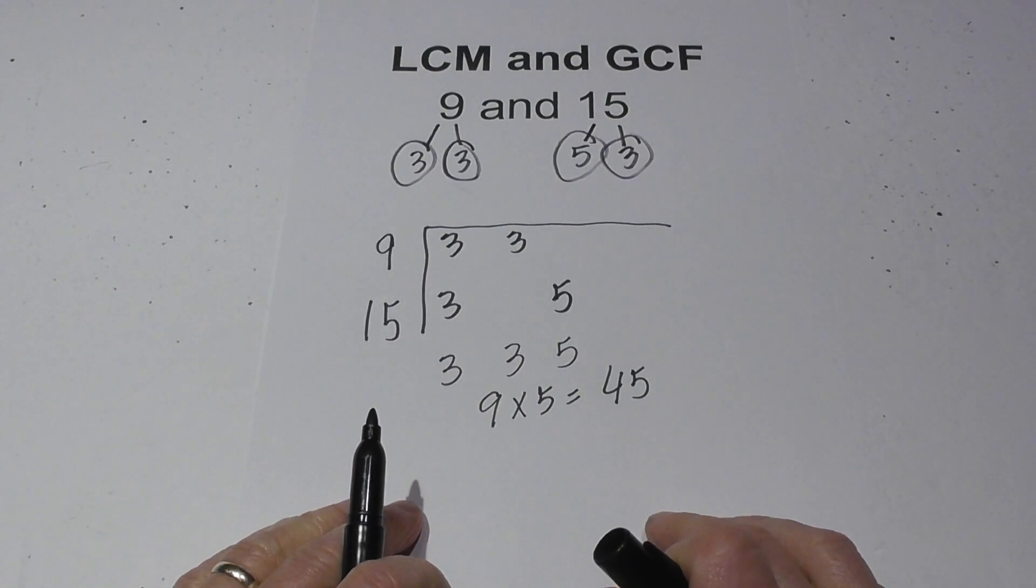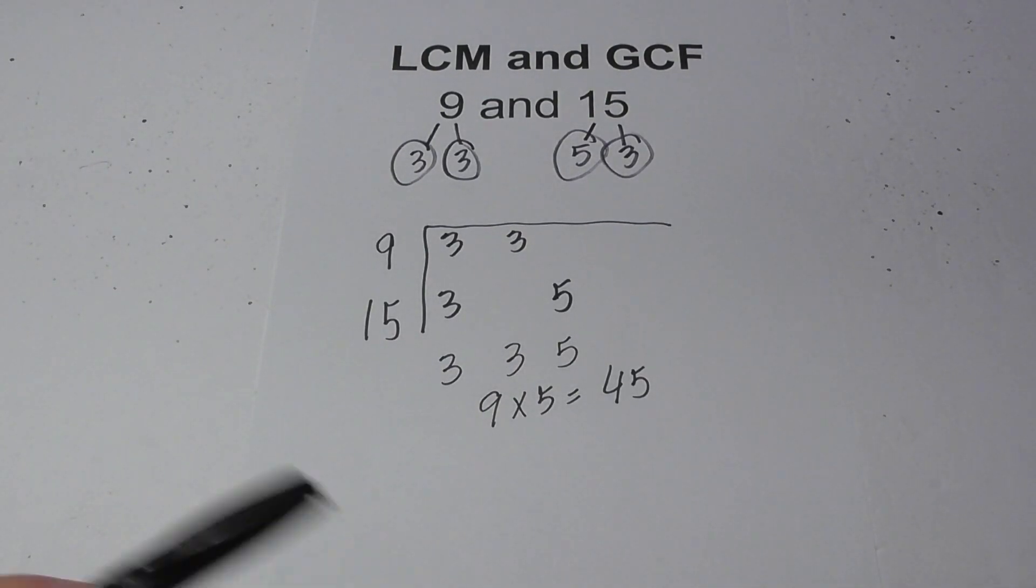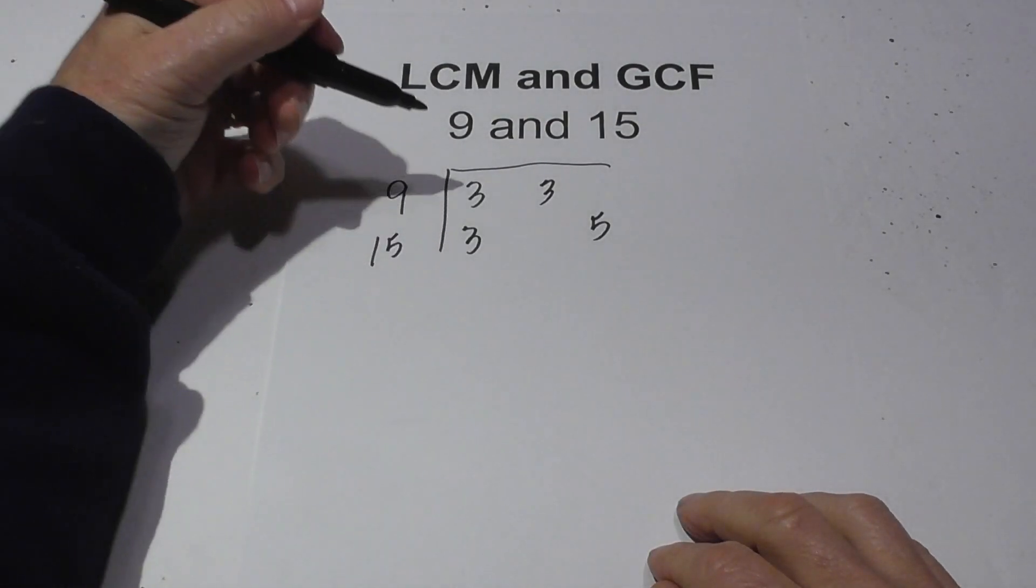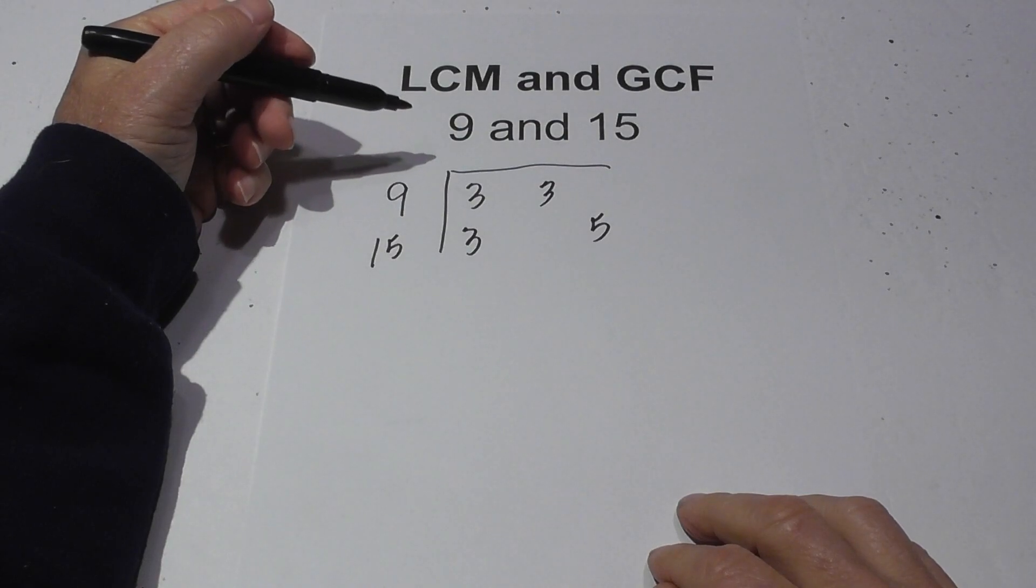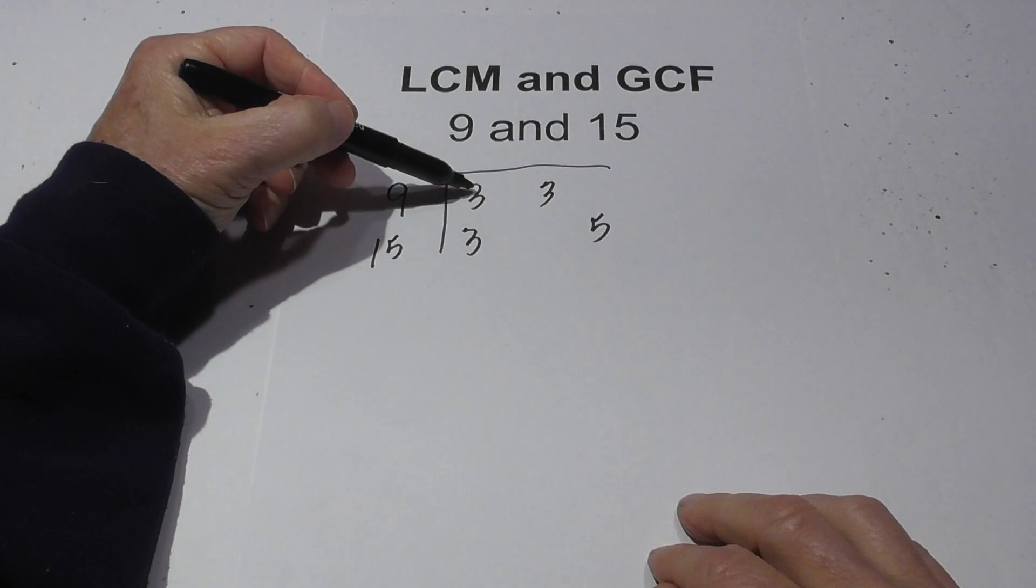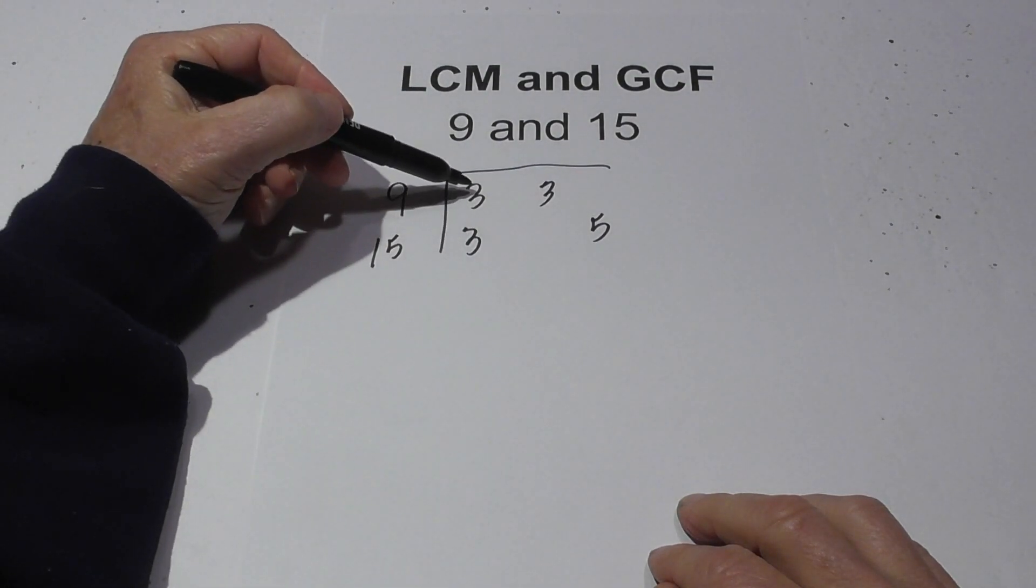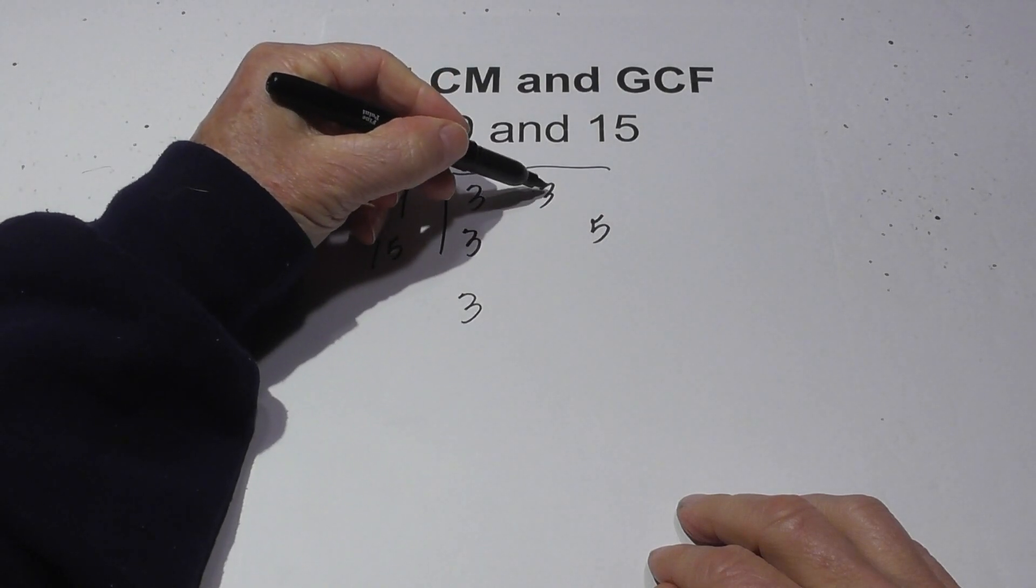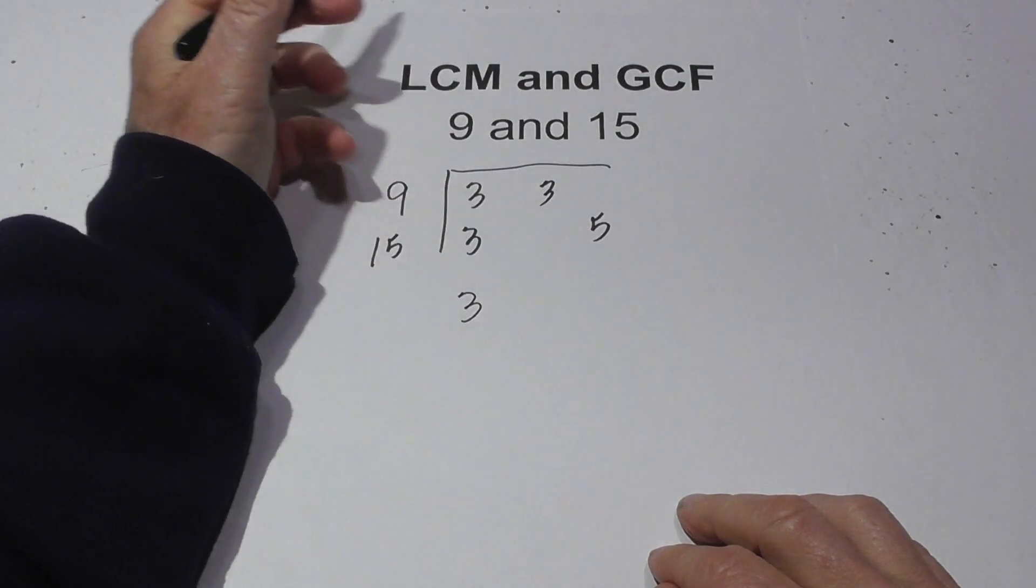Now I can use the same chart but I'm going to rewrite it. Now I've rewritten this and for the GCF it's really easy. The rule you follow is that you have to have pairs. So you're looking for 2 in the column. Since I have 2 3's I'll bring down 1 3. There's not 2 here and there's not 2 5's. So the GCF is 3.